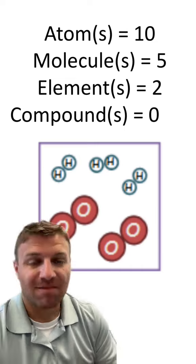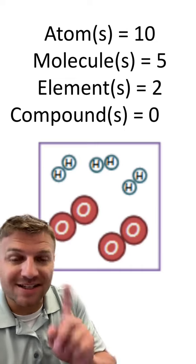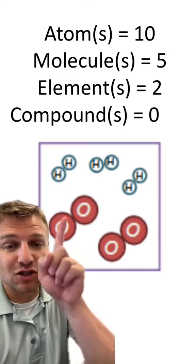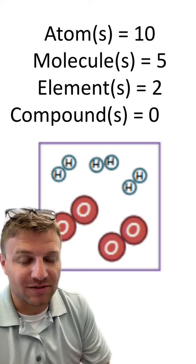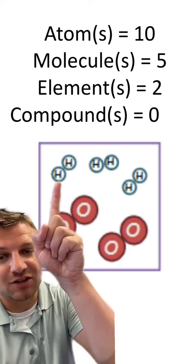All right, let's go over the answers. There are 10 total atoms in this square because there are two in each one of these molecules. That means there are five total molecules. There are only two elements: oxygen and hydrogen.